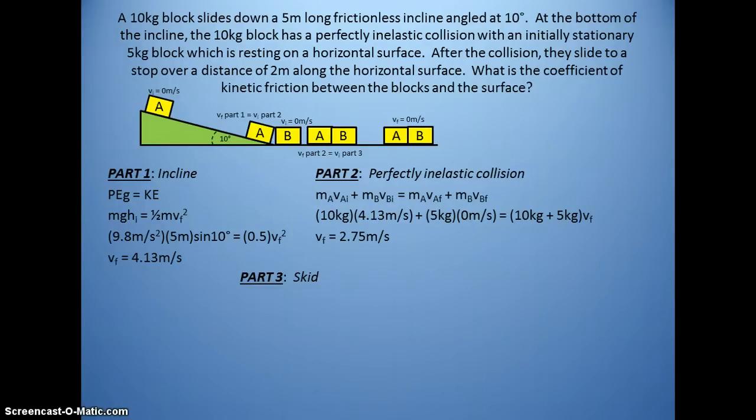And then on to part three, where again, you can choose to use energy or dynamics and kinematics, whichever you choose. I've chosen energy, where the two masses are moving together initially, and again, this is the moment right after the collision. Then they end with no energy, so that must have been negative work done. Here we have one-half mv squared, and the work done by friction, where friction is mu times the normal, and the normal, in this case, on a horizontal surface, is mg. Again, the mass will divide out of this one. Substituting in our numbers, the only thing we don't know is mu. You will notice that the 2.75, the VF from part two, has become VI for part three, and we're left that mu is 0.19.